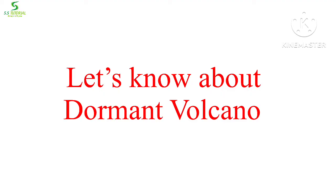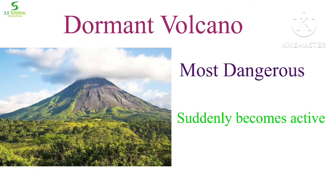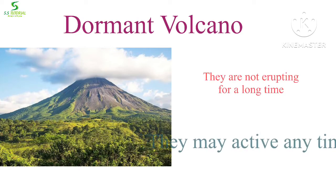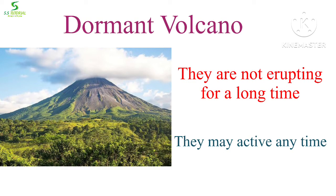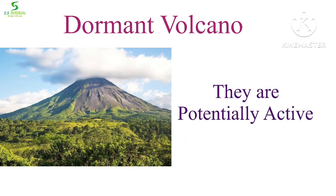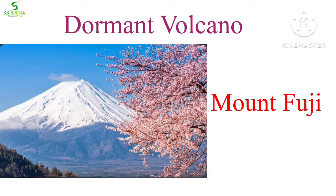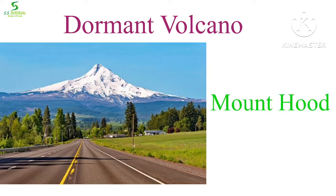The world's most dangerous types of volcanoes are dormant types, as no one can predict when eruption will take place and they become active. Dormant volcanoes are those which are not erupting for a long time but have a possibility of eruption in the future — they are actually potentially active. Mount Fujiyama in Japan and Mount Hood are examples of dormant volcanoes.